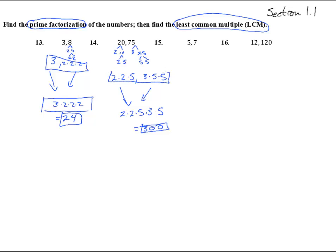And you can try that, you can list out all of the multiples of 20: 20, 40, 60, 80, 100, 120, and so on, and 75: 75, 150, so on, and that's where they will first meet that list.